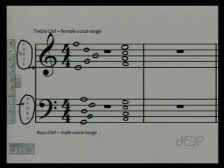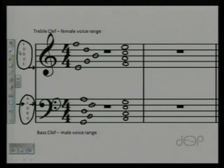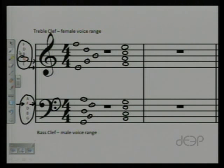A lot of times people refer to the bass clef as the F clef. The F line is highlighted, and the two dots of the bass clef symbol are above and below that F line, which helps you remember it. Similarly, up in the treble clef, the G is highlighted because people sometimes think of the treble clef as the G clef — the symbol circles around the G line. So G clef is the treble clef, and F clef is the bass clef.